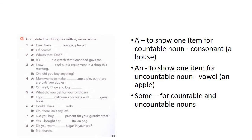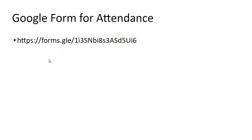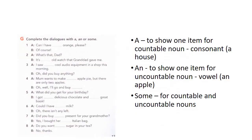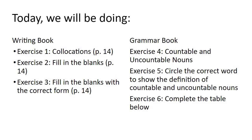Finally, exercise eight: complete the dialogues with a, an, or some. Example: 'Can I have an orange please?' — 'Of course.' 'What's that, Dad?' — 'It's an old watch that granddad gave me.' Use a before consonant sounds — a house, a watch, a game. Use an before vowel sounds — a, e, i, o, u — like an old watch. Remember to complete the Google Form to be marked present. There are eight exercises total in today's class.